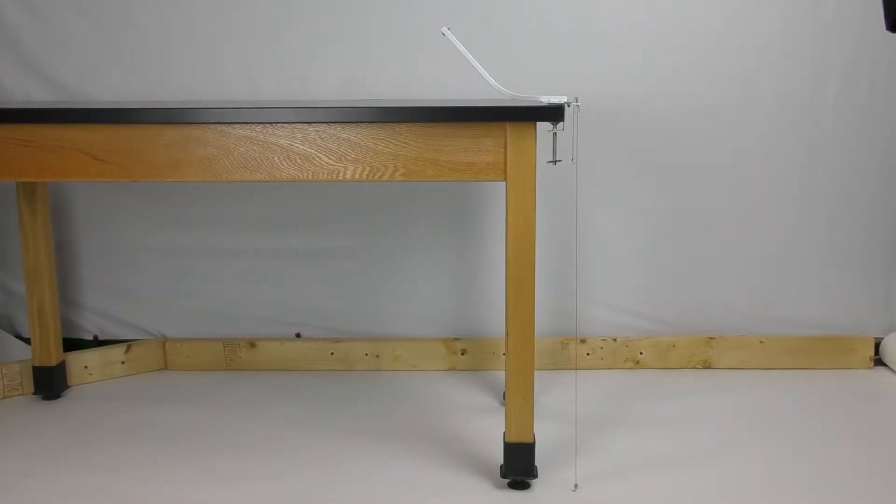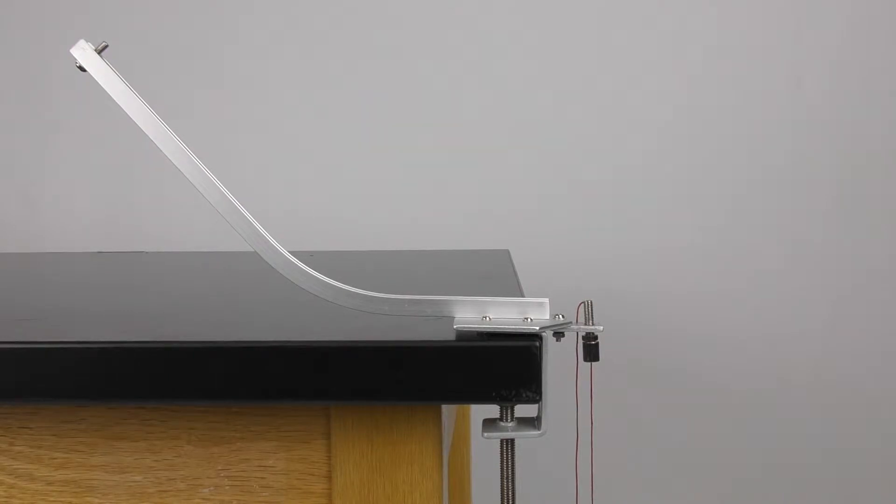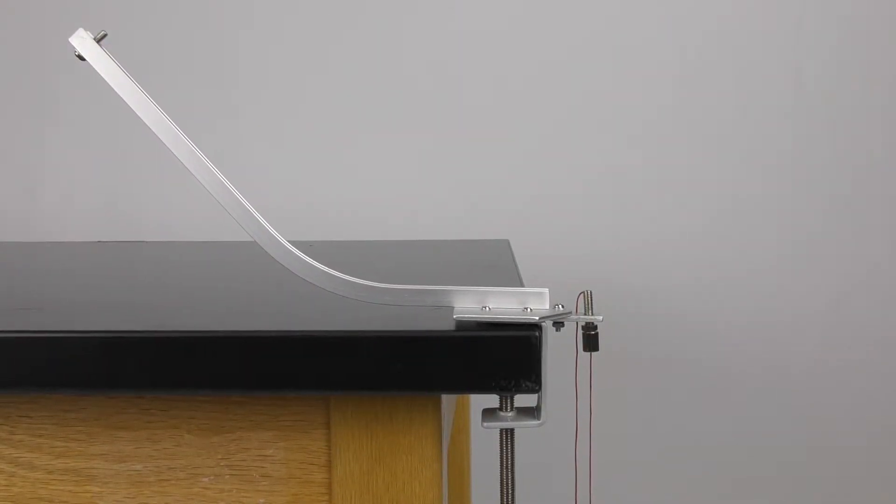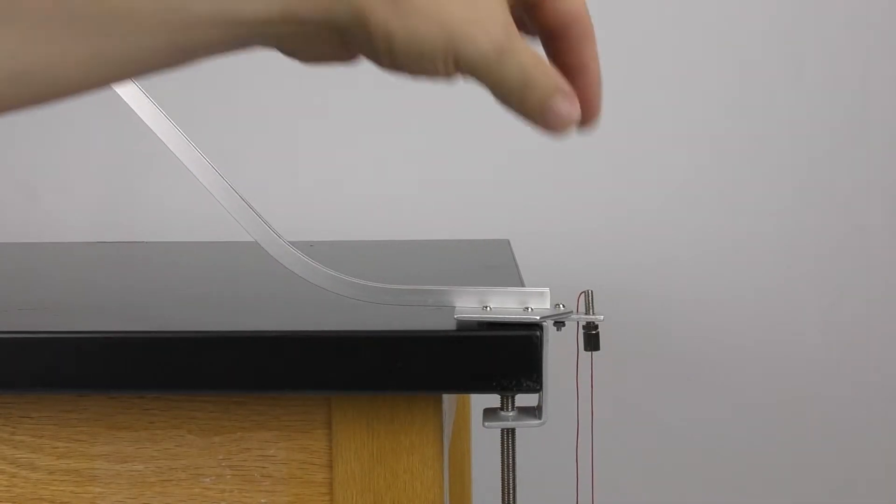The clamp fits table edges up to 3.5 cm thick and the pendulum bob line is 80 cm long. The most unique feature besides the included clamp is the ability to easily adjust the pendulum bob line.